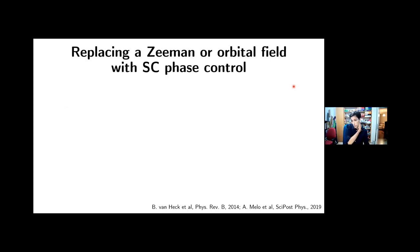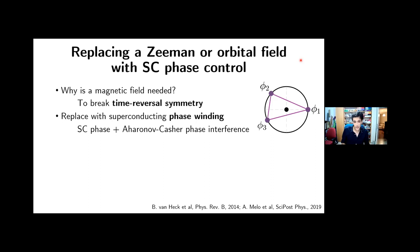And now, so what we set out to do is replace the Zeeman or orbital field with superconducting phase control. And there are some references down below for people who have also thought of similar ideas. So the first thing we need to do to get started is ask, why do we even need the magnetic field? And of course, the immediate answer, we have to break time reversal symmetry, right? We don't want to have these Kramers pairs. And when a physicist is asked to break time reversal symmetry, he immediately applies a magnetic field or pushes a current.